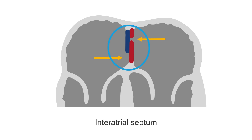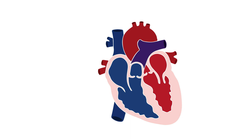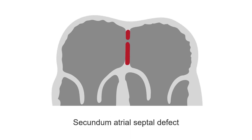This area is called the fossa ovalis. When flow occurs between the two atria — from the right atrium to the left atrium — the hole is referred to as a foramen ovale. This is a normal structure in the fetal heart, but it should close over after birth. A secundum atrial septal defect is characterized by an interatrial septum only made up of the septum primum, the septum on the left atrium side.